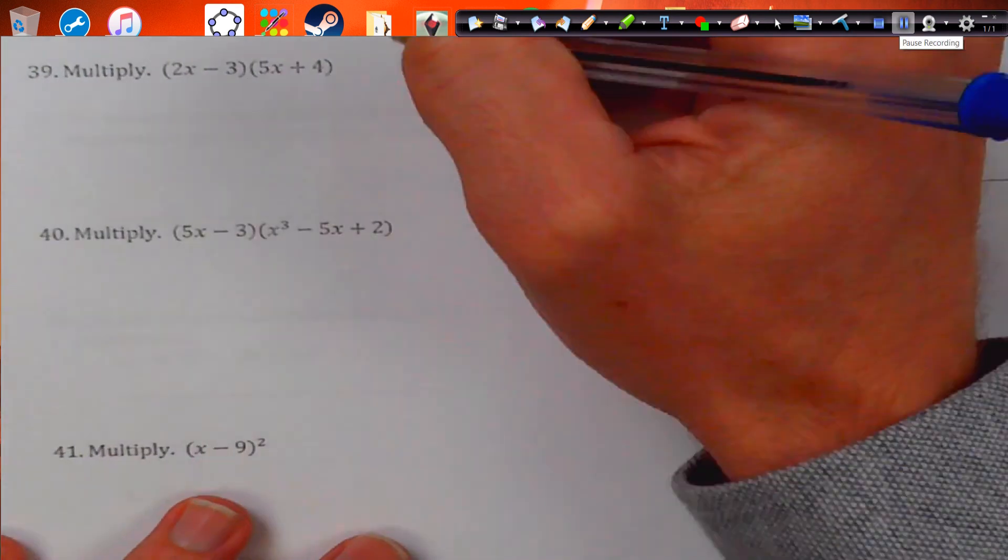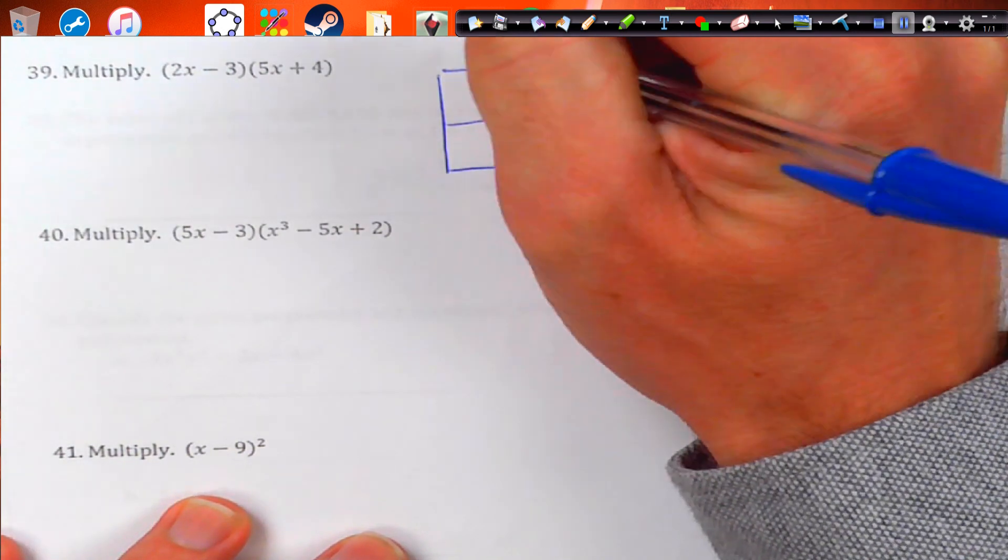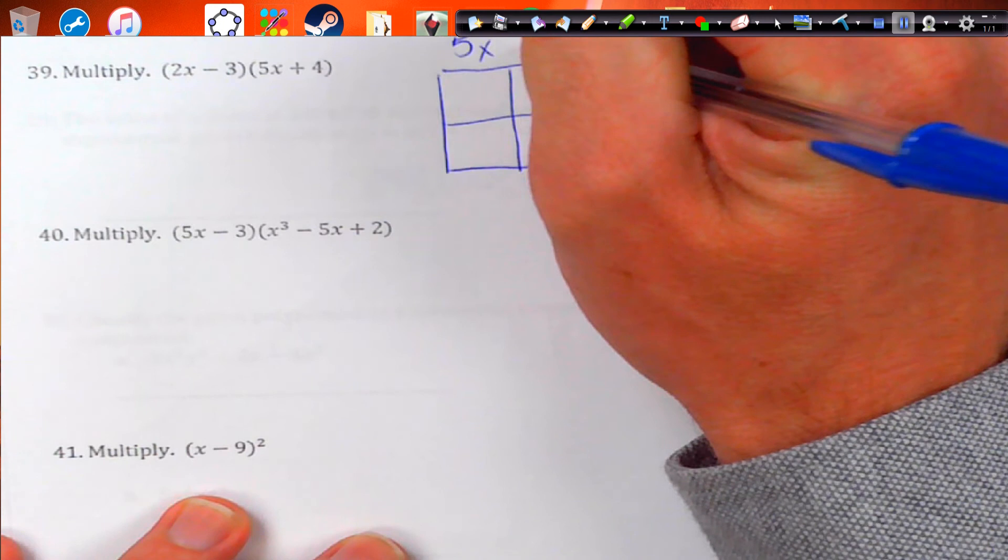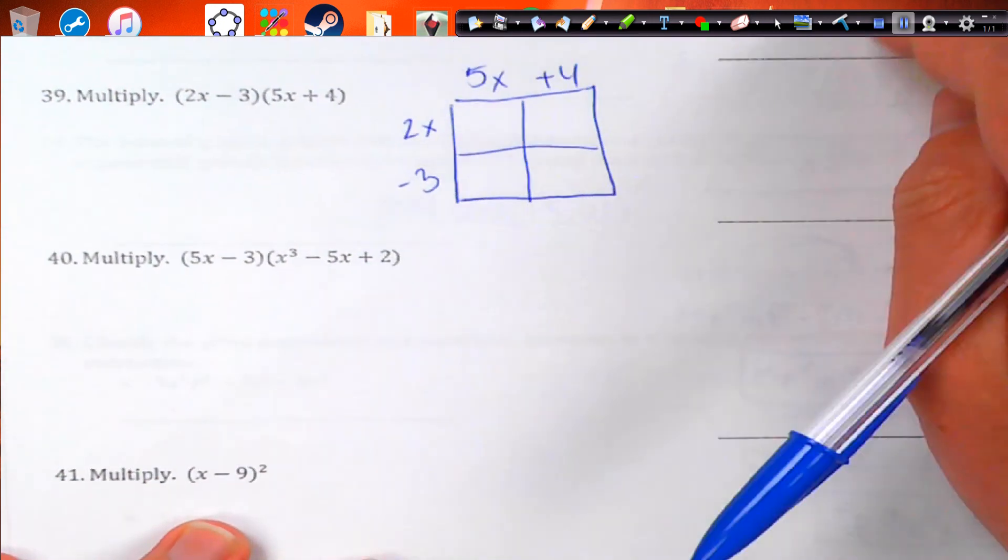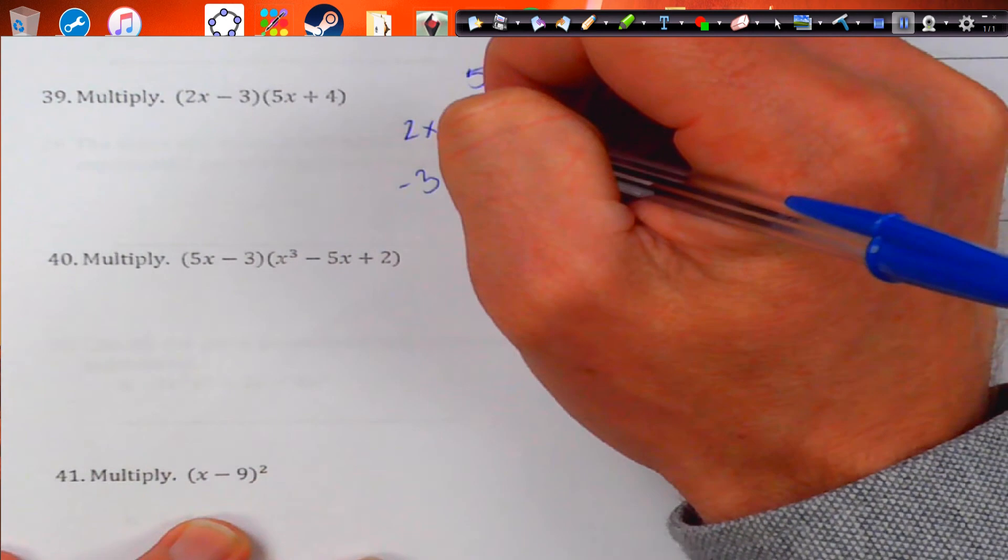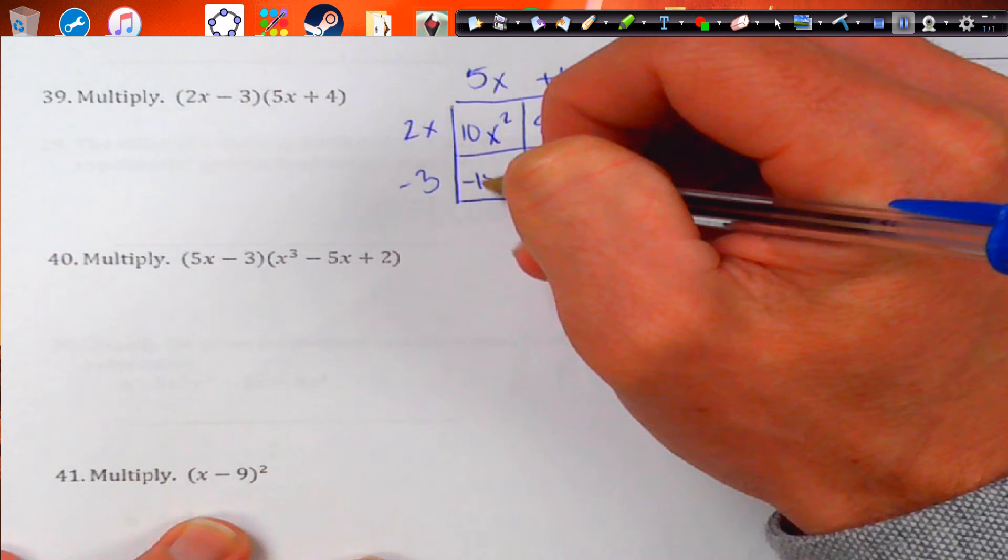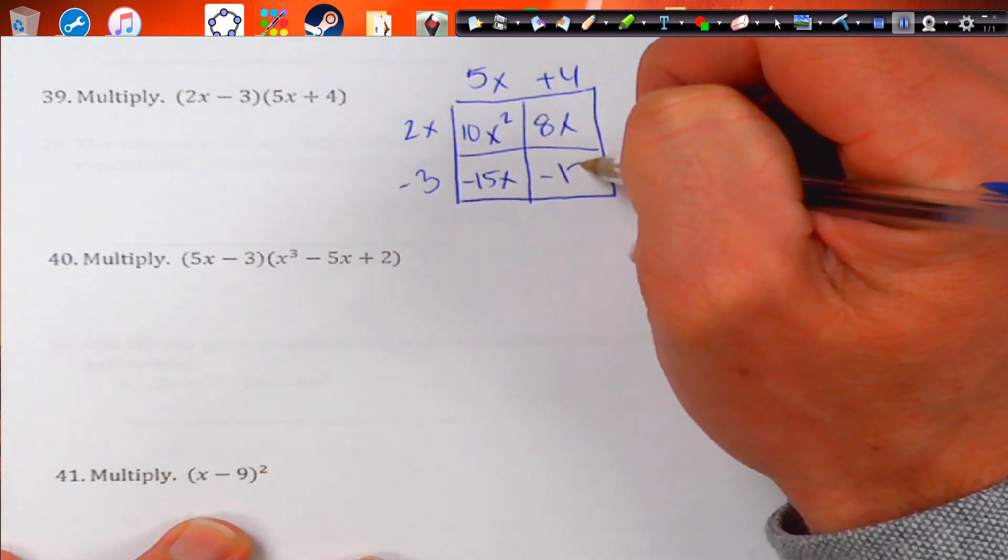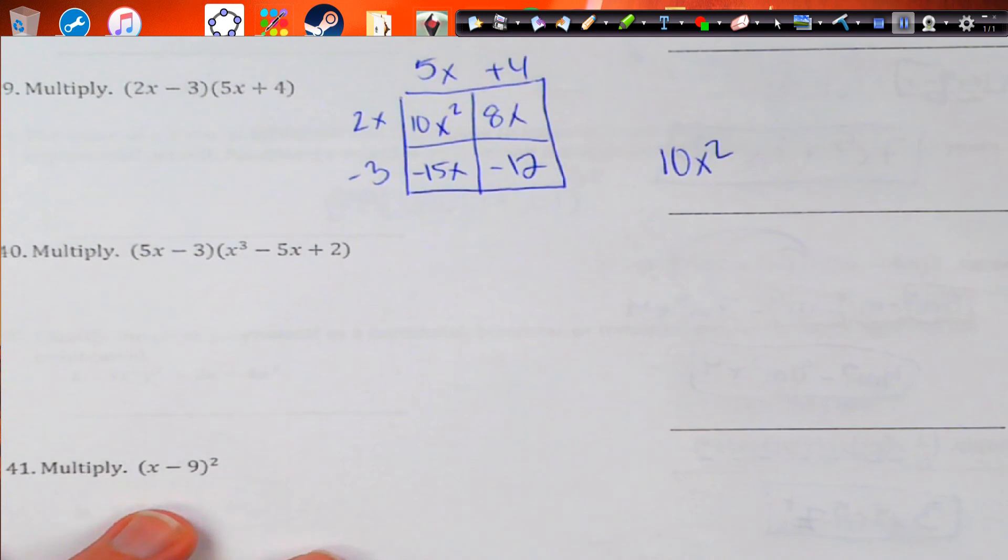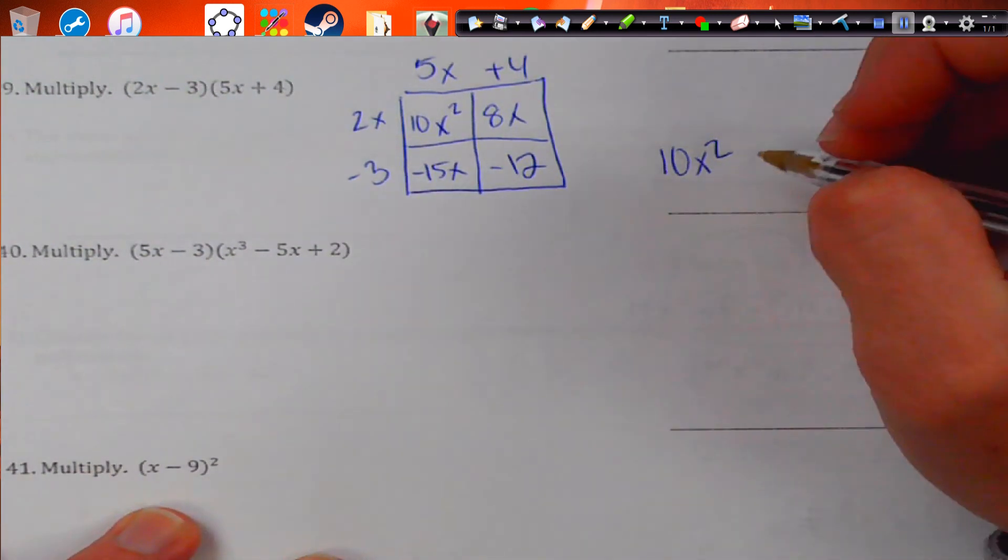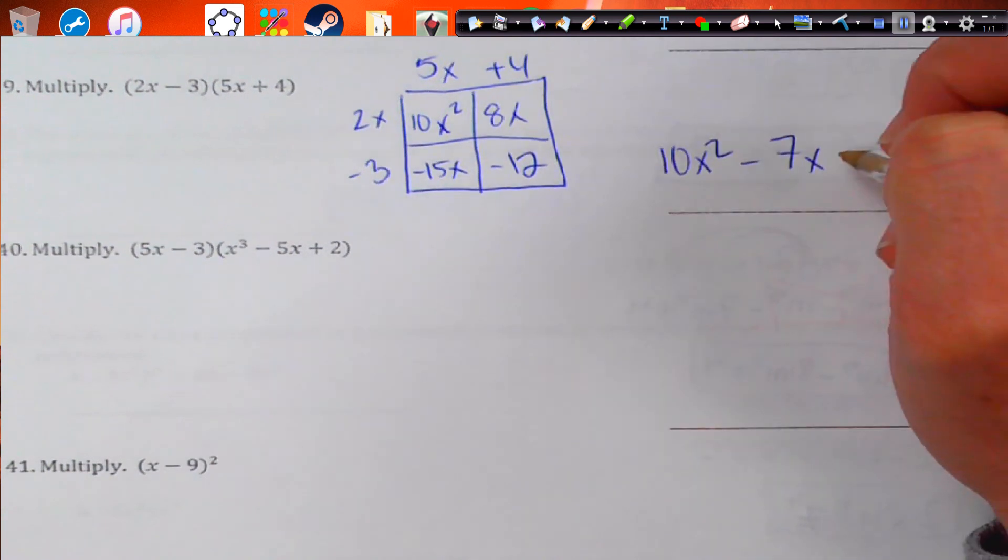Number 39. Again, this is going to be box method. Binomial times a binomial. It doesn't matter which one goes on the top, which one goes on the bottom. But we're going to get 5 times 2 is 10 and then x squared. And then this is going to become 8x. And that's negative 15x. And that's going to be negative 12. Once we get 10x squared, negative 15 plus 8 is going to give us negative 7x and then negative 12.